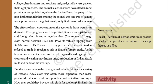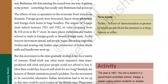The effects of non-cooperation on the economic front were more dramatic. Foreign goods were boycotted, liquor shops picketed, and foreign cloth burned in huge bonfires. The import of foreign cloth halved between 1921 and 1922, its value dropping from Rs. 102 crores to Rs. 57 crores. In many places, merchants and traders refused to trade in foreign goods or finance foreign trade. As the boycott movement spread, people began discarding imported clothes and wearing only Indian ones. Production of Indian textile mills and handlooms went up.